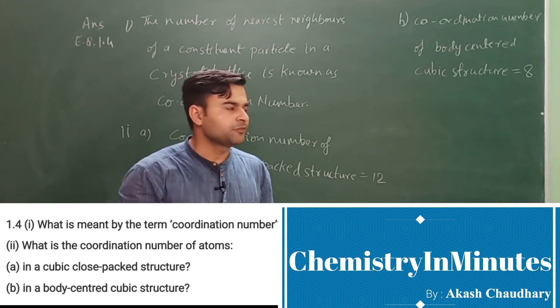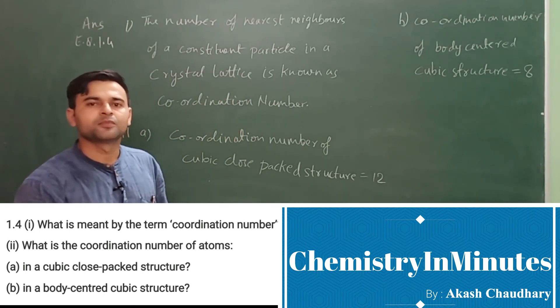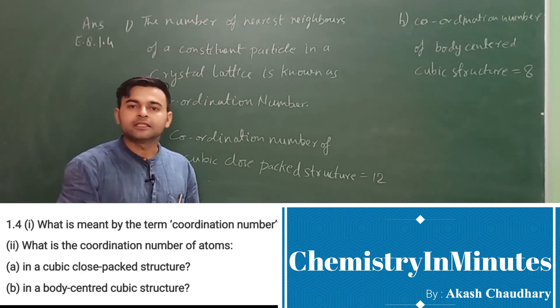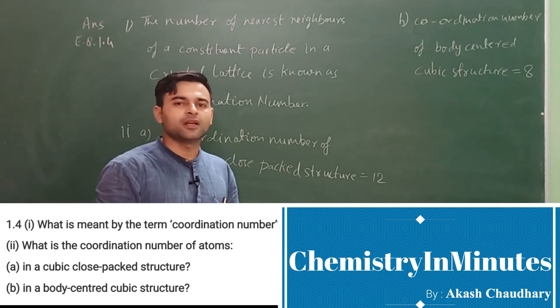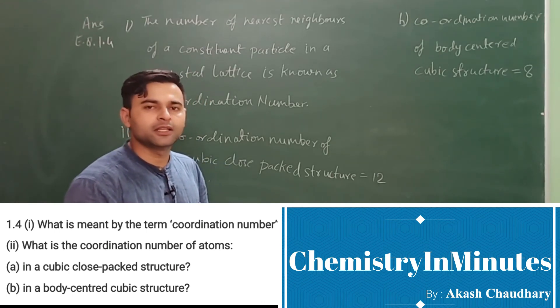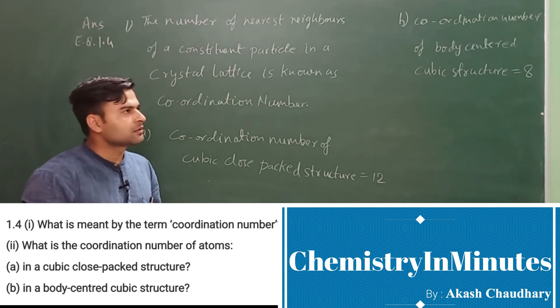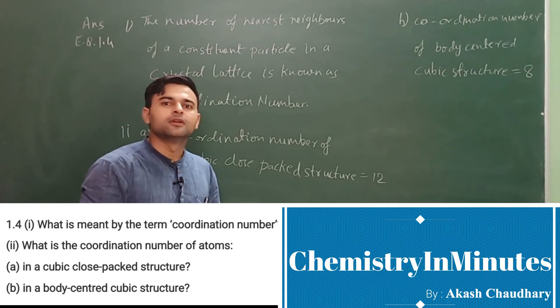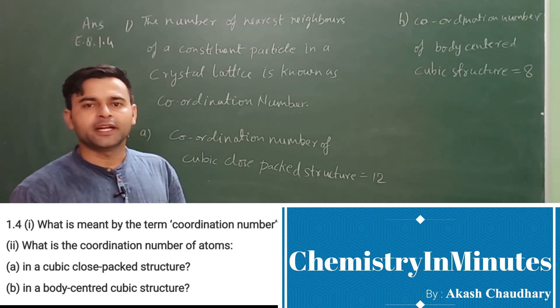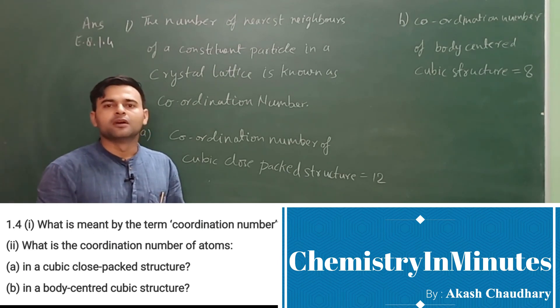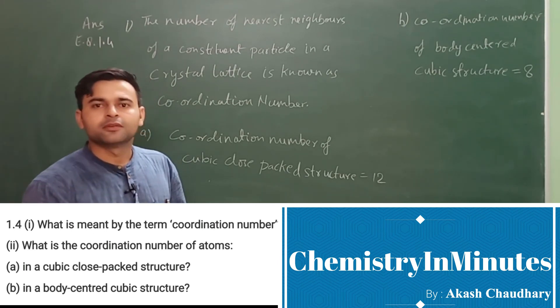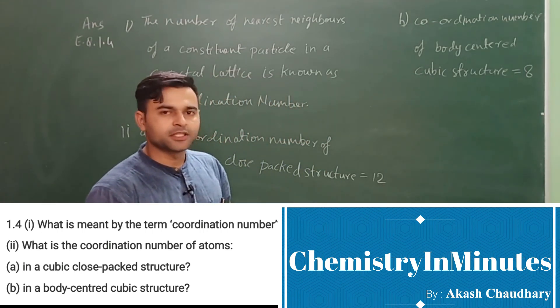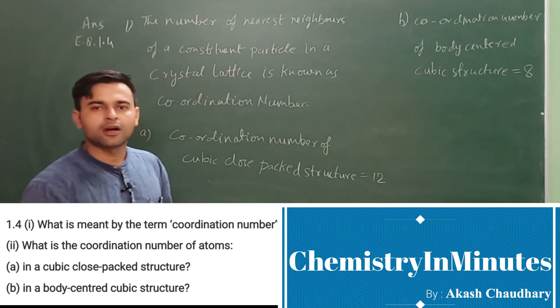This we can find because in a body-centered cubic structure there are 8 atoms at the corners and one atom at the center. So the center atom will have 8 nearest neighbors at the corners. Similarly, a corner atom is surrounded by 8 cubes, and all those 8 cubes will have an atom at their center. So it will have 8 nearest neighbors. Therefore, coordination number of body-centered cubic structure is 8, and this is the answer to the question.